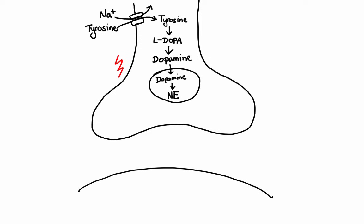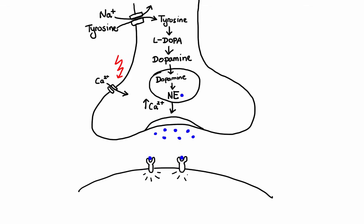In the third step, arrival of the action potential triggers opening of calcium channels and thus influx of calcium into the neuron. The increase in calcium causes the synaptic vesicle to fuse with the membrane and release its contents into the synapse. In the fourth step, norepinephrine binds to the postsynaptic receptor on the effector organ, which triggers intracellular response. Norepinephrine also binds to the presynaptic receptor, which results in decrease of norepinephrine release through negative feedback.